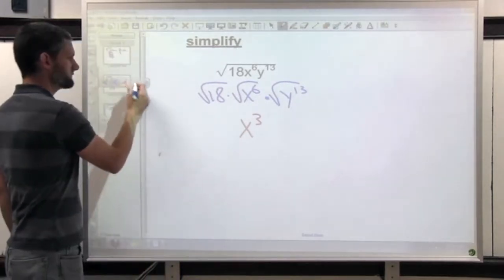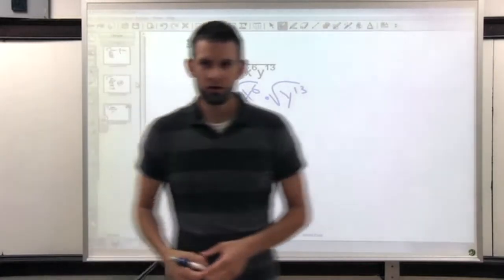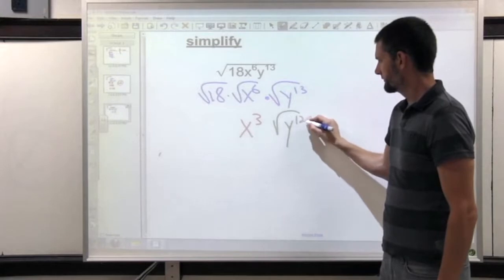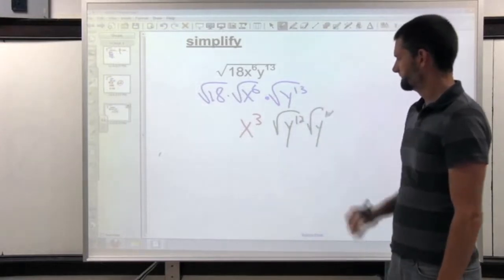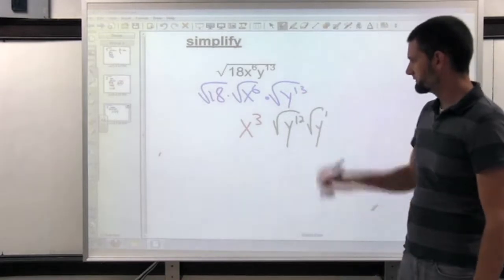Now, 13 is not even. We can't divide it by 2 equally. So what we do when we have an odd exponent is we break it up so that there's one less. So a y to the 12 and a y to the 1. 12 and 1 makes 13.